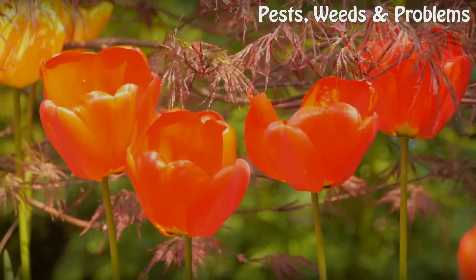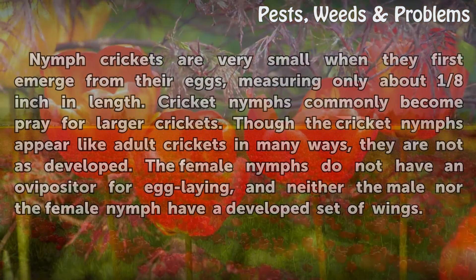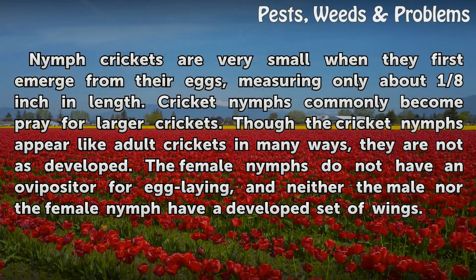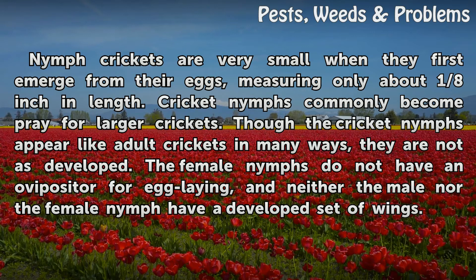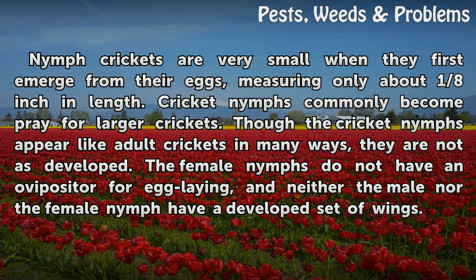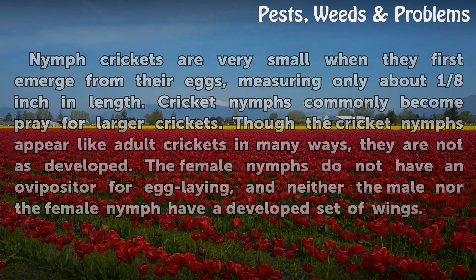Nymphs. Nymph crickets are very small when they first emerge from their eggs, measuring only about one-eighth inch in length. Cricket nymphs commonly become prey for larger crickets. Though the cricket nymphs appear like adult crickets in many ways, they are not as developed. The female nymphs do not have an ovipositor for egg laying, and neither the male nor the female nymph have a developed set of wings.